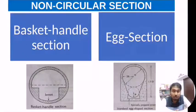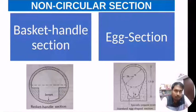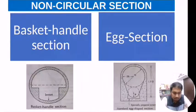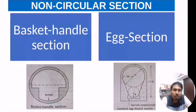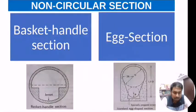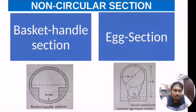The first non-circular type is the bucket handle section. In this type of sewer, the upper portion of the sewer pipe takes the shape of a bucket handle. This shape of sewer pipe is generally not used in present days.